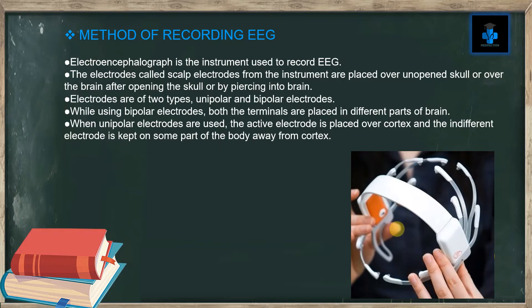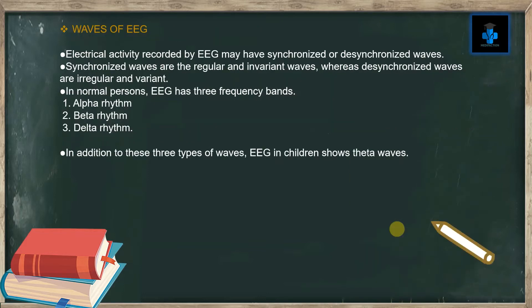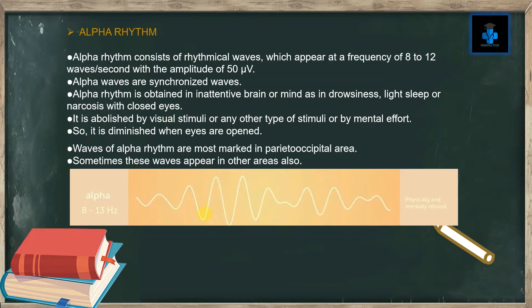Waves of EEG: electrical activity recorded by EEG may be synchronized or desynchronized. Synchronized waves are regular and invariant waves, whereas desynchronized waves are irregular and variant. In normal persons, EEG has three frequency bands: number one is alpha rhythm, number two is beta rhythm, and number three is delta rhythm. In addition to these three types, EEG in children also shows theta waves.